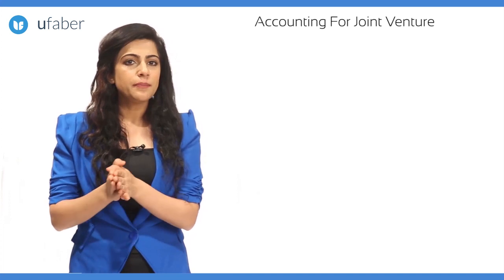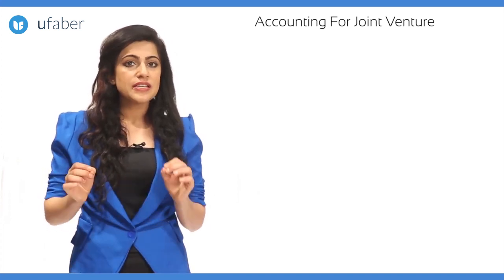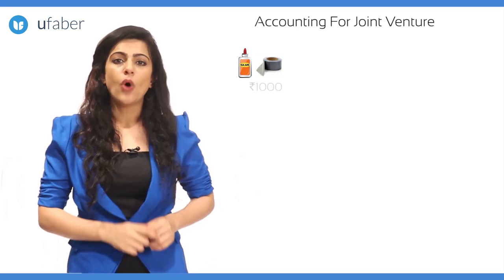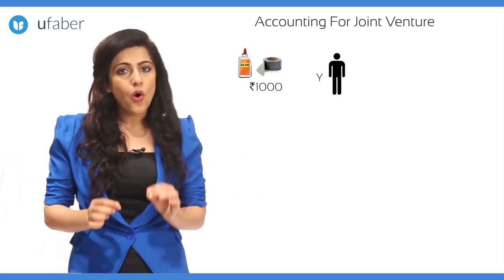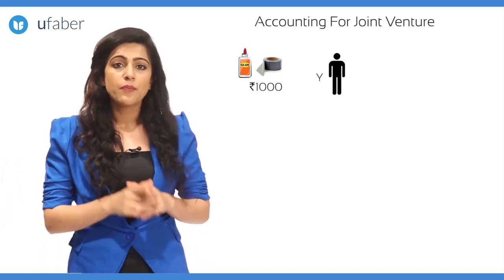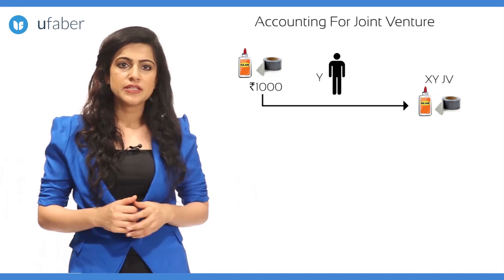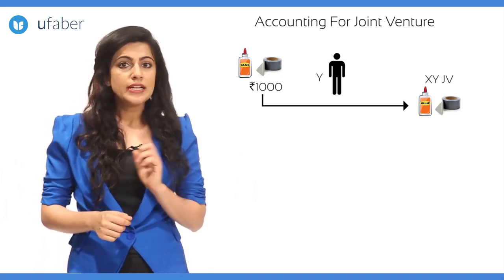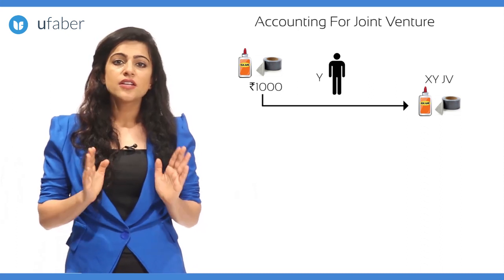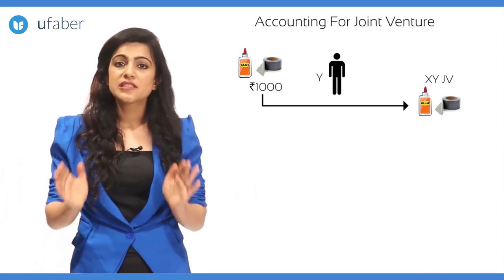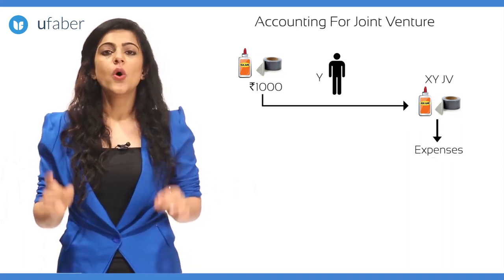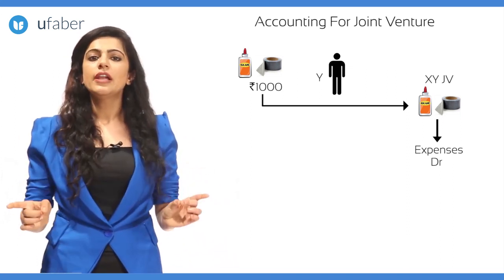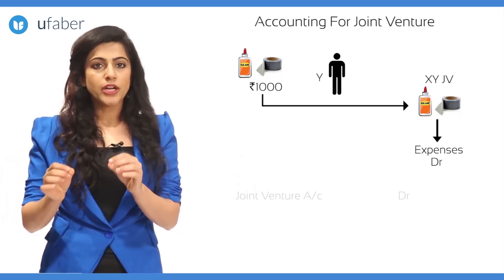In the current marriage assignment, there was an emergency requirement for items like glue, tape, etc. costing rupees one thousand, which Y already had in his regular business and brought into this venture. The glue, tape, etc. brought in by Y are consumable items and are an expense for the joint venture. The golden rule for nominal account is debit all expenses and losses, credit all income and gains.